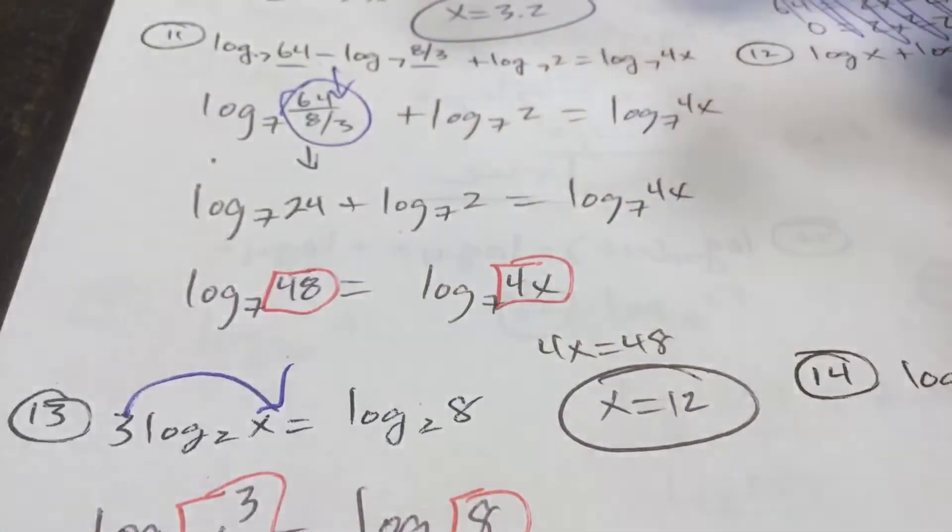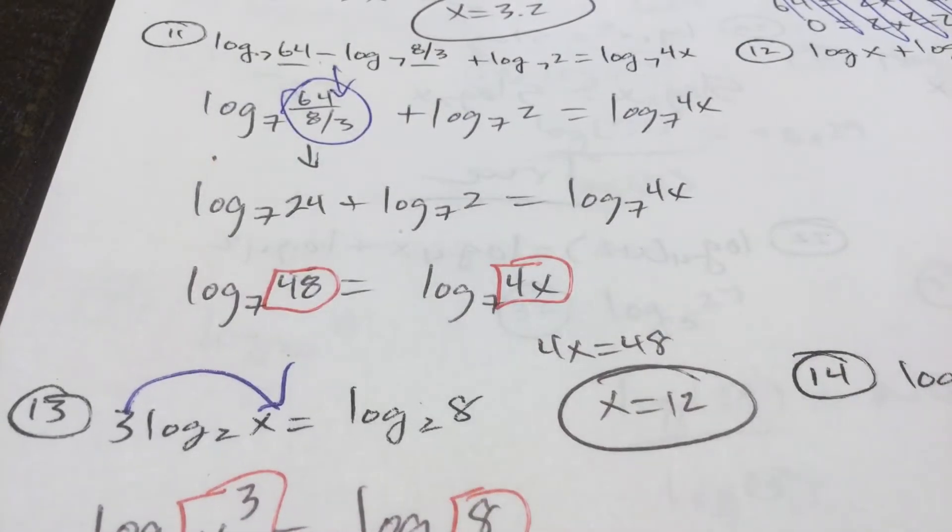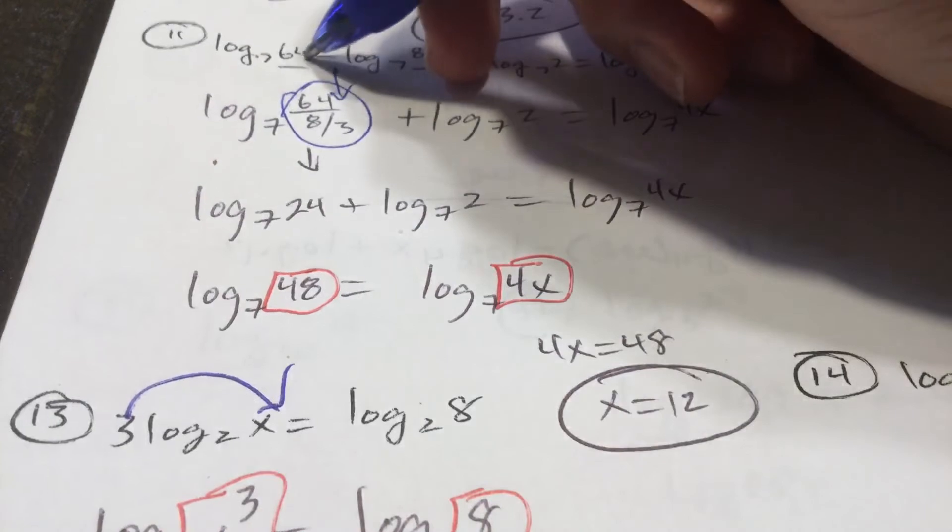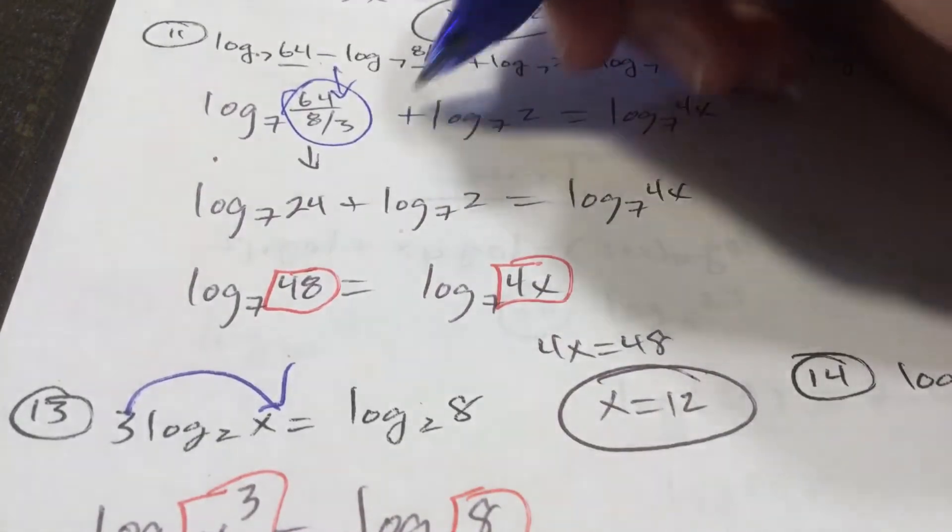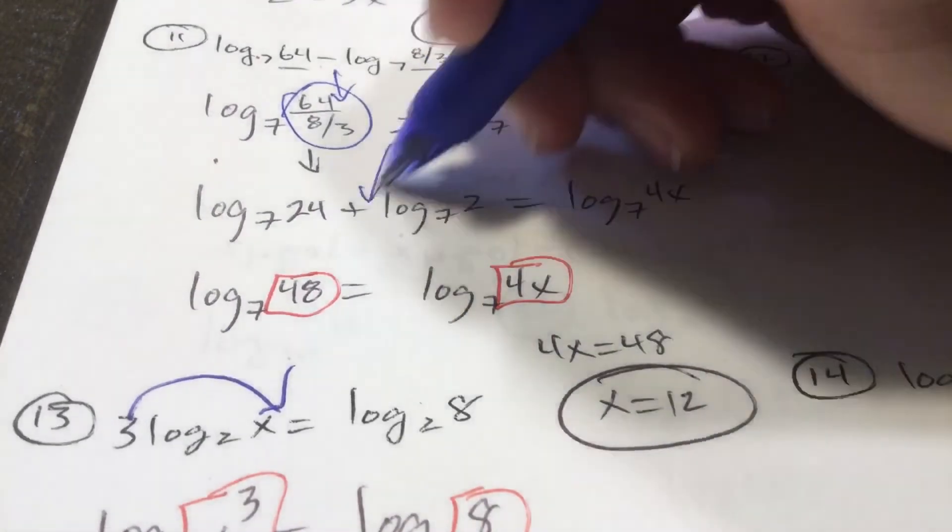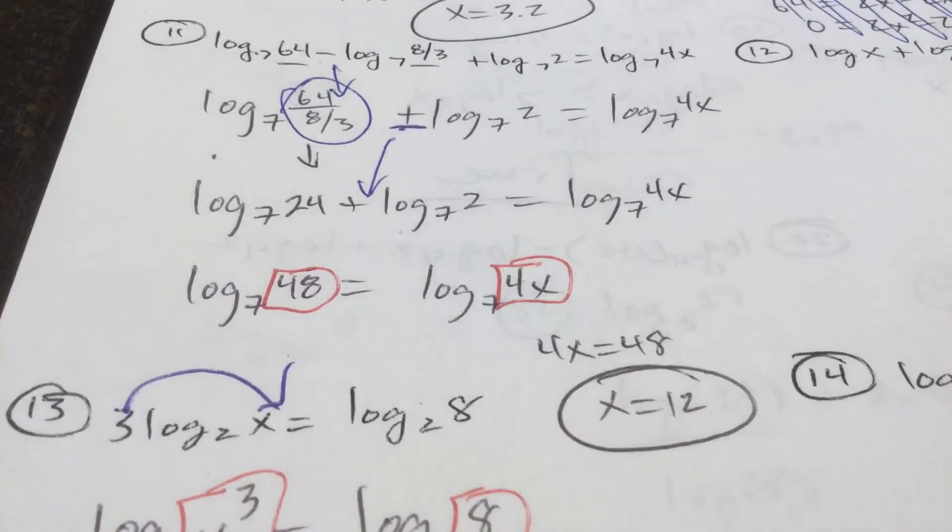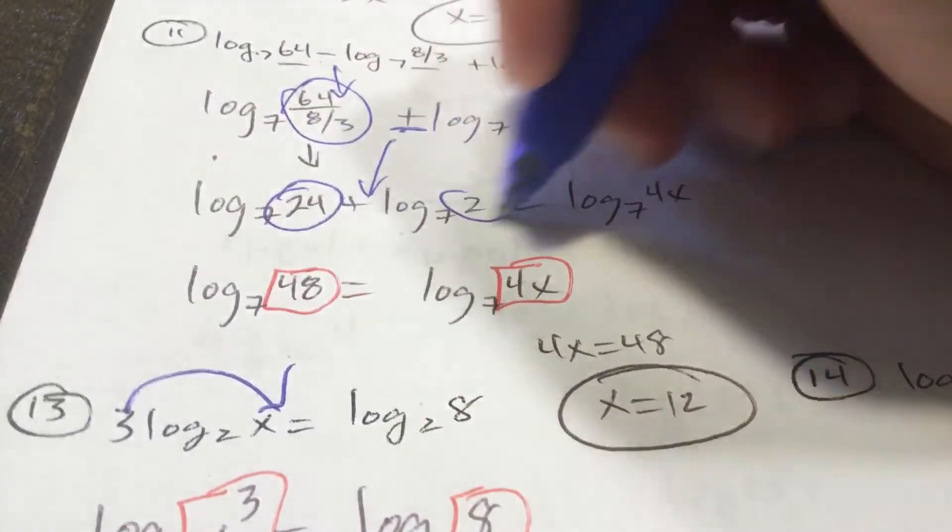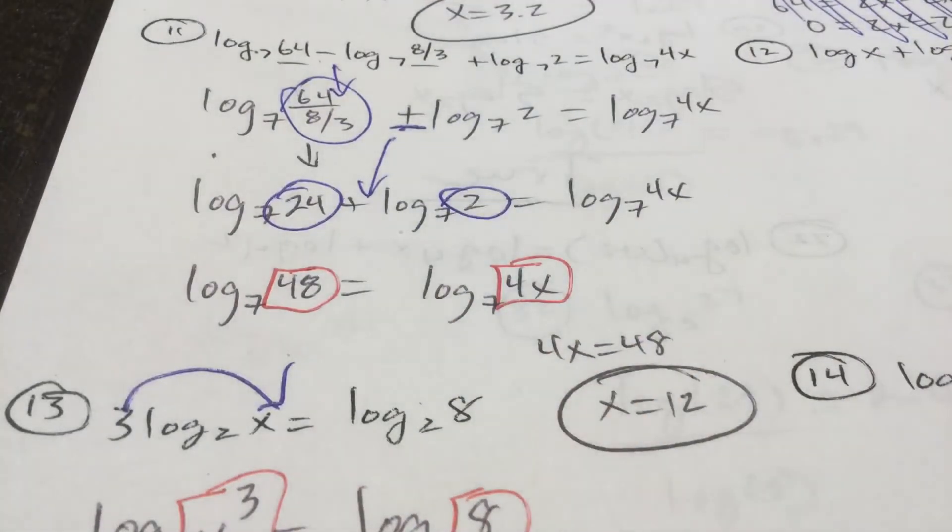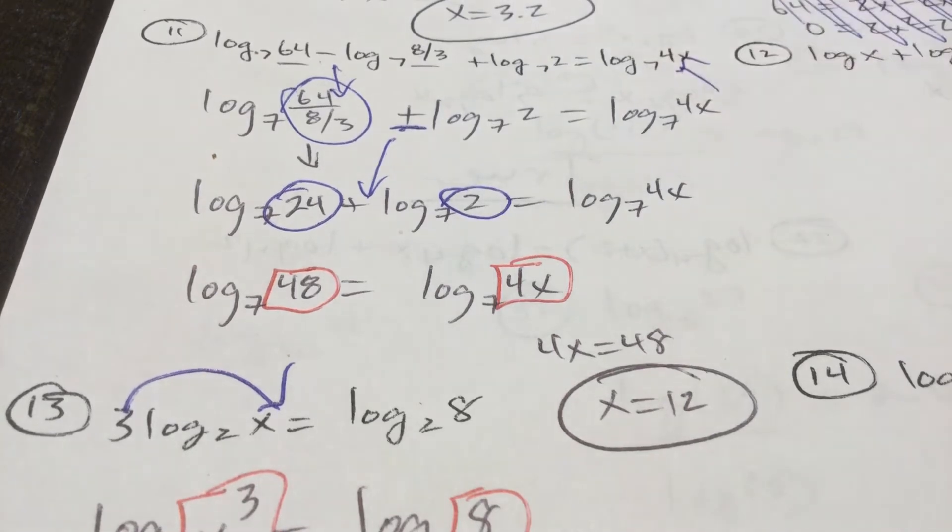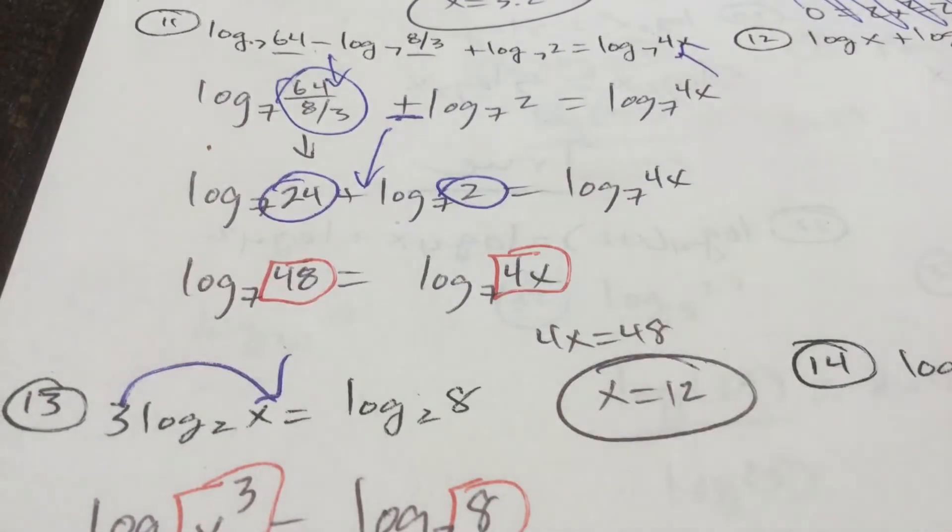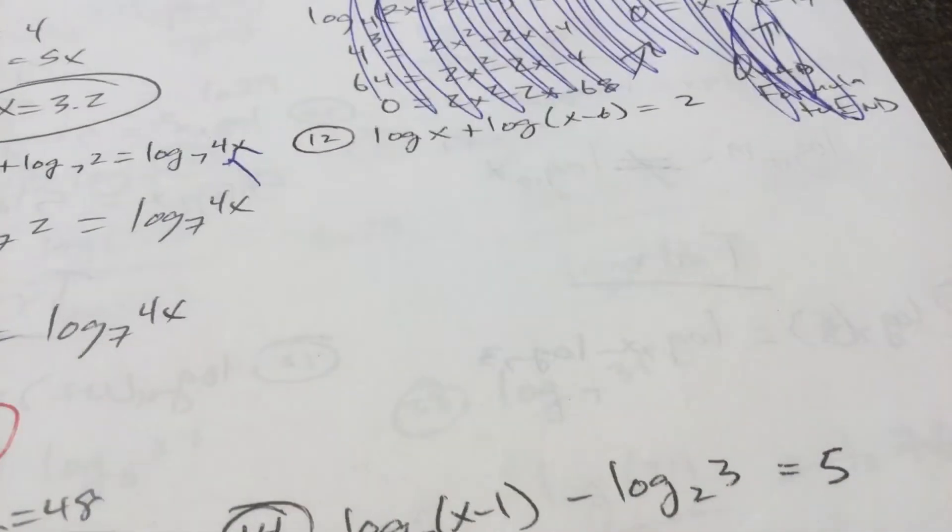Anyway, believe it or not, but 64 divided by 8 thirds is 24, okay? Then, it's like order of operations. Do that division first. Then do the multiplication in the log world. Addition means multiplication. So that's why 24 times 2 is 48. Log base 7 of 48 equals log base 7 of 4x. 4x equals 48. X is 12. Plug 12 back in. That's great. All right. Now,